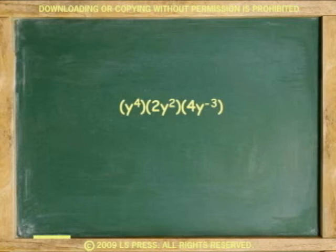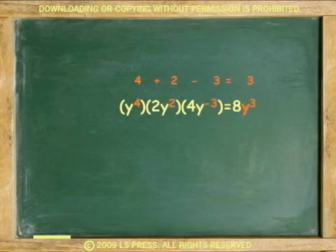Another example. Multiply the monomials y to the 4th times 2y squared times 4y to the negative 3. To do this, multiply the coefficients. 1 times 2 times 4 equals 8. Add the exponents 4 plus 2 minus 3 equals 3. And the expression is equal to 8y to the 3rd.